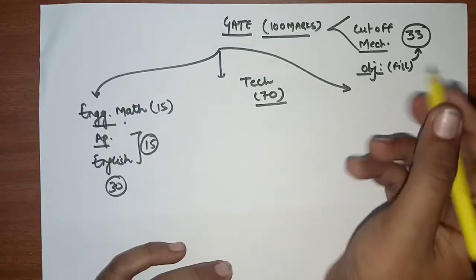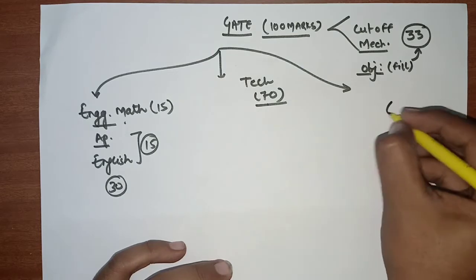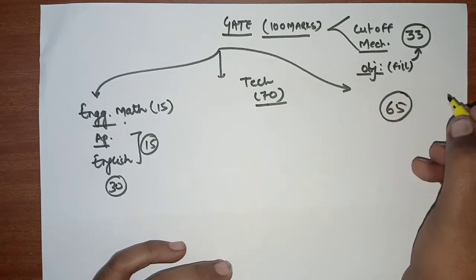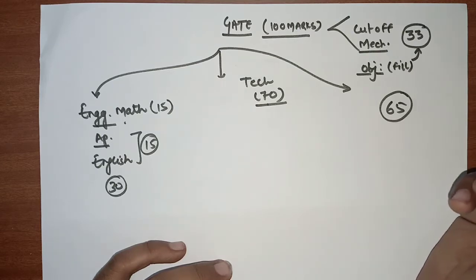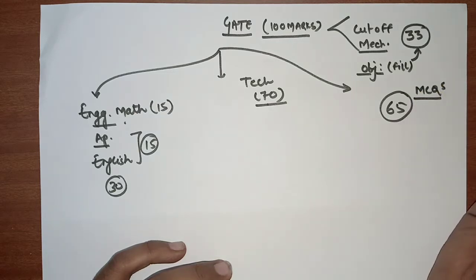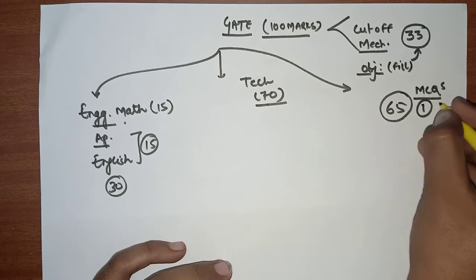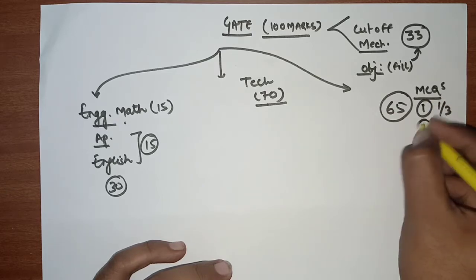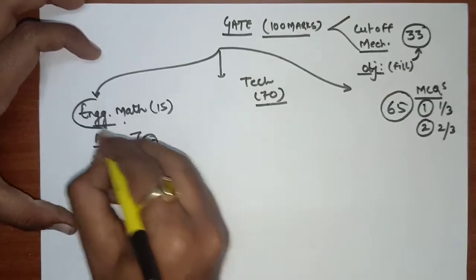If you are a mechanical candidate, you will have 70 marks technical and 30 marks non-technical. There are 65 questions total. Approximately 25 questions are of 1 mark and 2 marks. Non-conventional type questions — MCQs — have negative marking: 1 mark questions carry 1/3 negative, and 2 mark questions carry 2/3 negative marking.